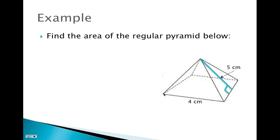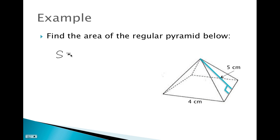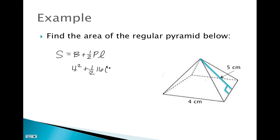Let's put this into an example — find the surface area of the regular pyramid below. This pyramid has a square base, because the only regular quadrilateral is a square, so all four sides equal four centimeters. Our formula is S equals the area of the base plus one-half of the perimeter times the slant height. The area of the base is four squared (four times four), and the perimeter is four plus four plus four plus four, which is 16, times the slant height of five.